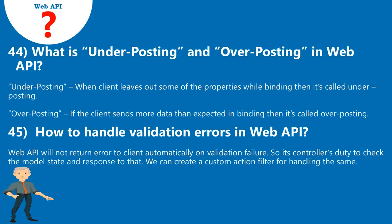Question 44: What is under-posting and over-posting? Under-posting: when the client leaves out some of the properties while binding, it is called under-posting. Over-posting: if the client sends more data than expected in binding, it is called over-posting.